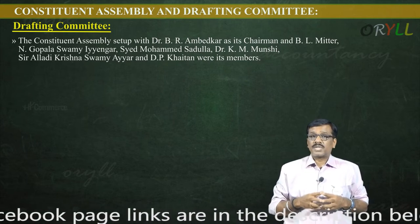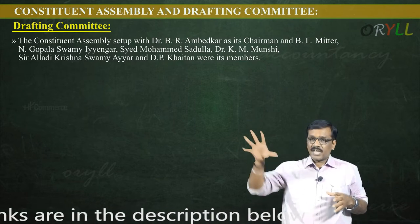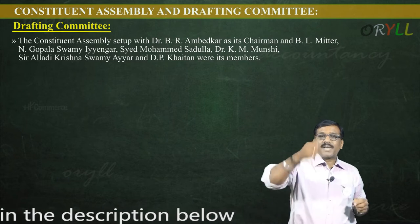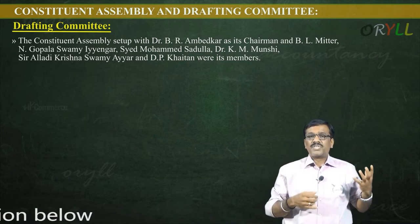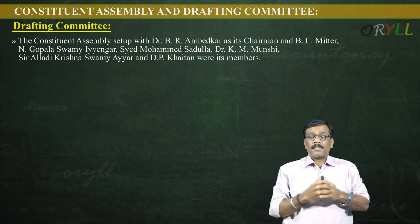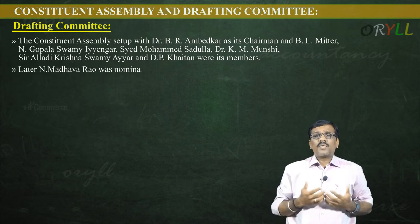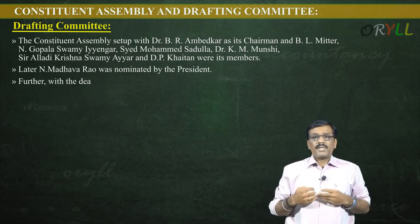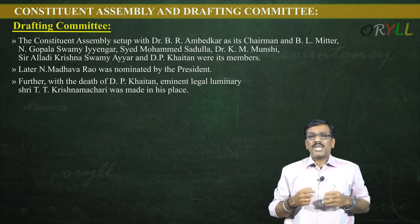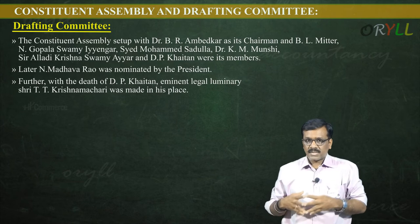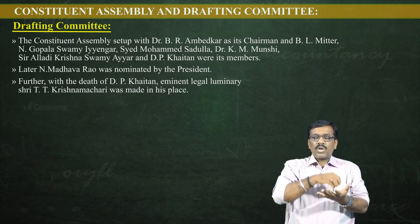Each member was an expert in some field — they were not picked randomly. Some were experts in business, some in judiciary, and so on. Later, N. Madhava Rau was nominated by the president. With the death of D.P. Khaitan, eminent legal luminary T.T. Krishnamachari was appointed in his place.